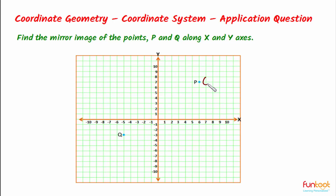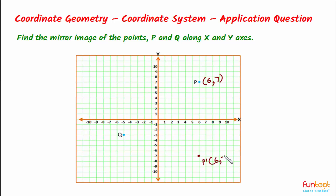The coordinates of point P are X = 6 and Y = 7. For finding the mirror image along the X axis, the X coordinate remains the same, so it stays 6, while the Y coordinate becomes the negative of itself, so it becomes −7. The mirror image will be (6, −7). We can call this point P′ with coordinates (6, −7). This is the mirror image of point P along the X axis.